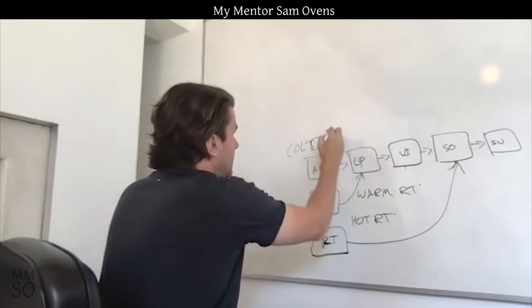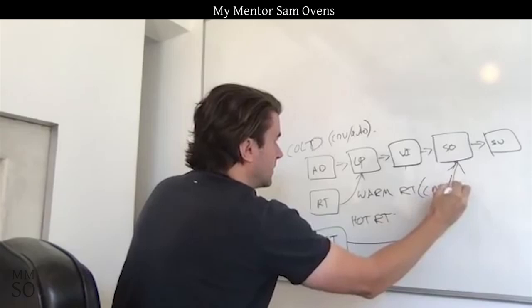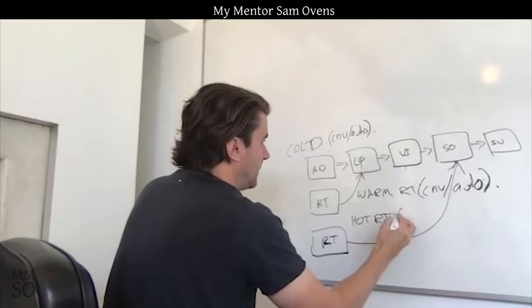This would be in a separate campaign called warm retargeting, and then this one would be cold traffic. This would be optimized for conversions auto, this would be optimized for conversions auto.